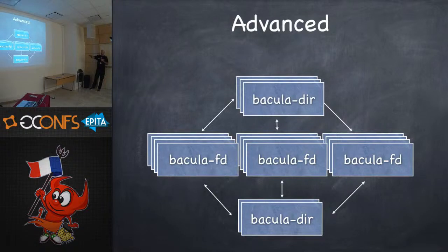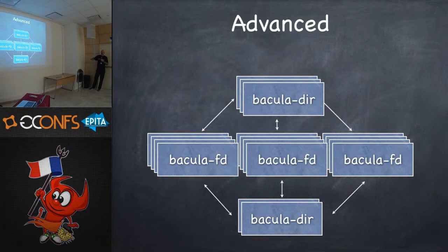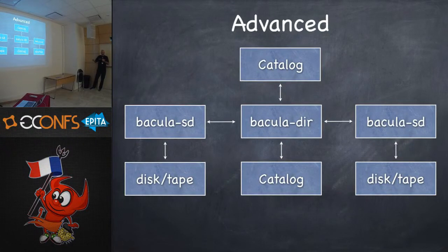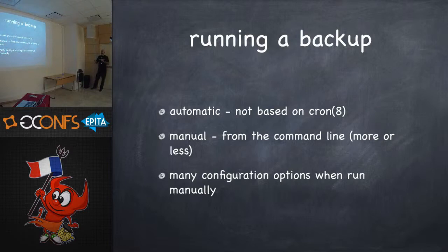Getting a little more advanced: you have one director with multiple FDs contacting it, but you also have another Bacula director that contacts them as well. These can be identically configured so that the FD thinks they're identical — it's the shared secrets that count when connecting through. You can go really crazy with one catalog, a director, another storage daemon, two different catalogs — it's all very feasible. You can have multiple databases, one per client or one per pool.